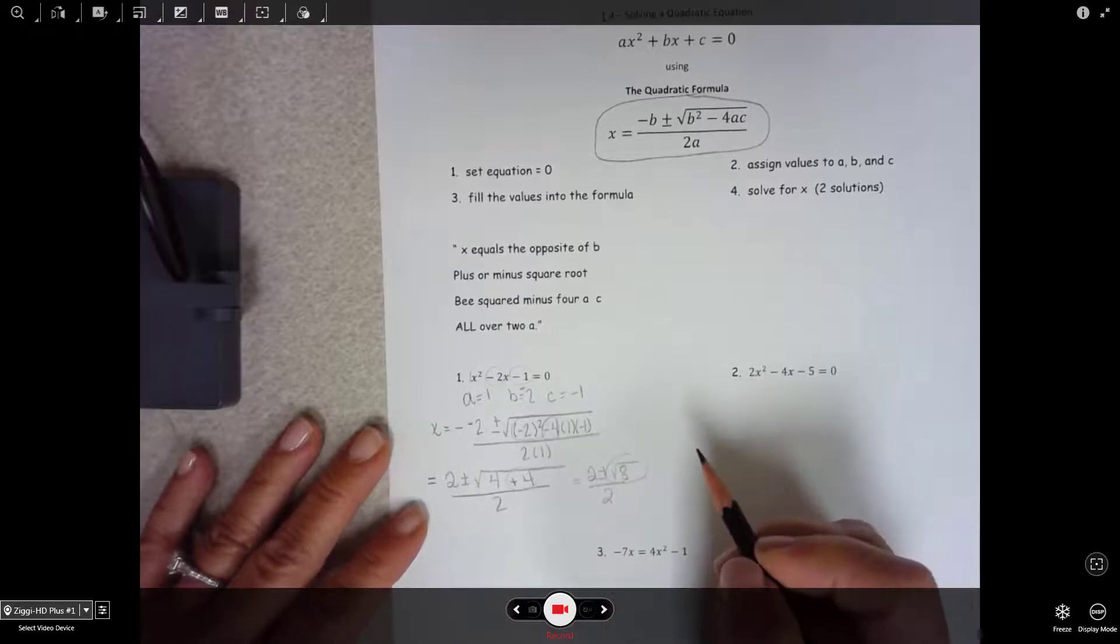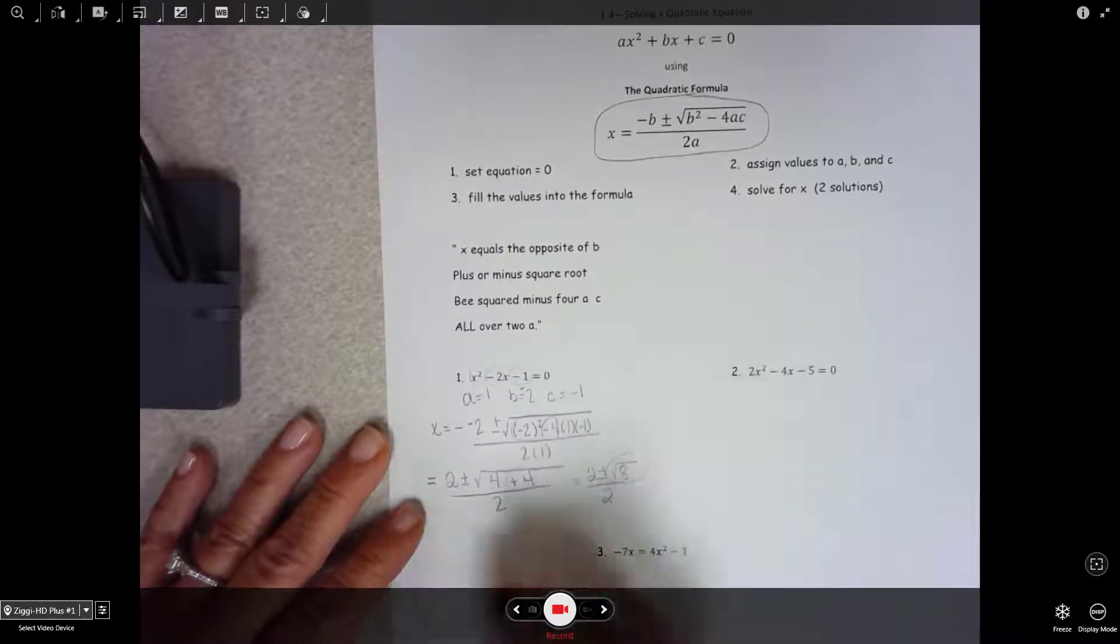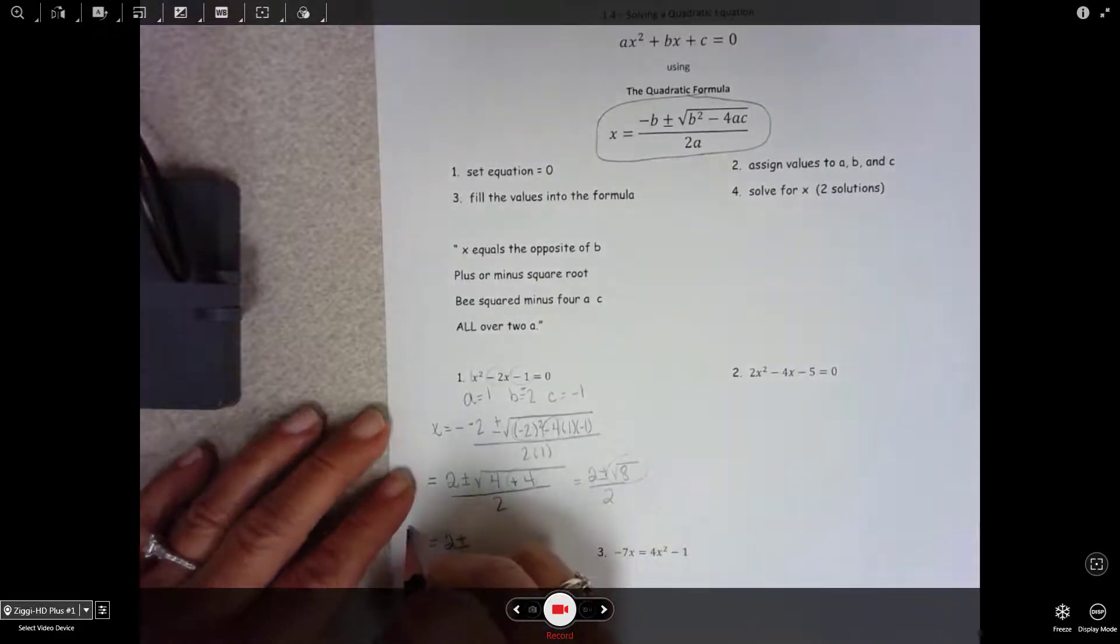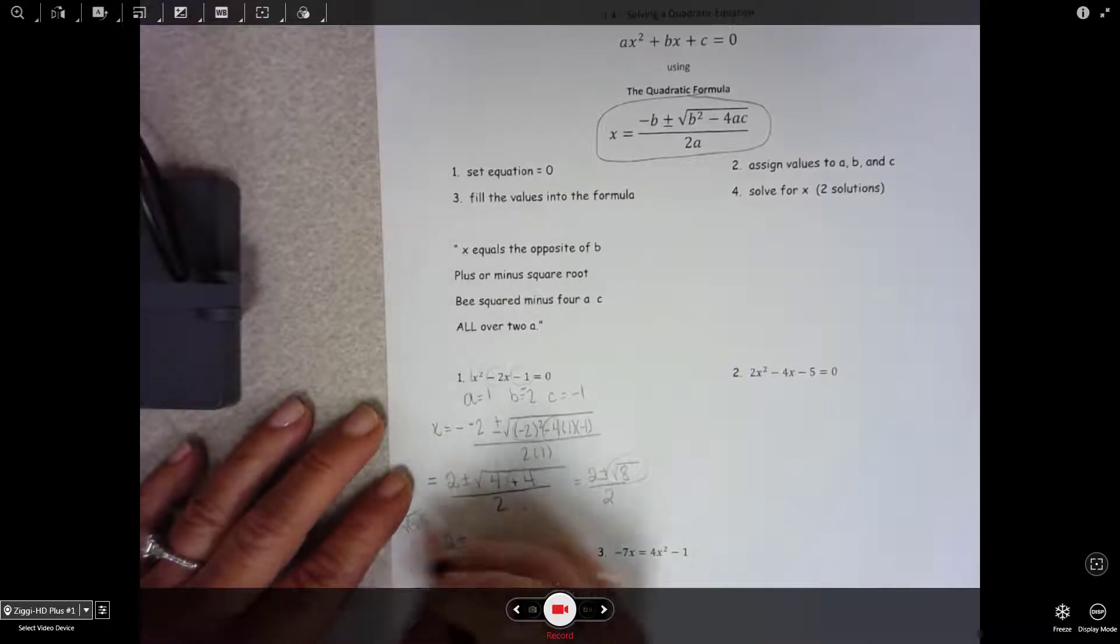And this we talked about simplifying radicals when we extracted square roots. So you can't leave it as square root of 8. That's the same thing as 4 times 2. And the square root of 4 is 2. And leave the solo guy in there.